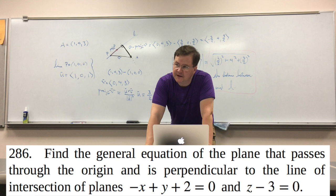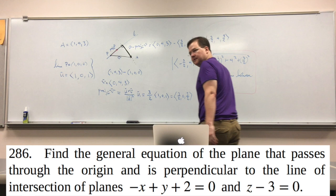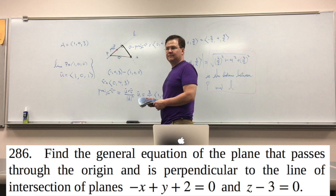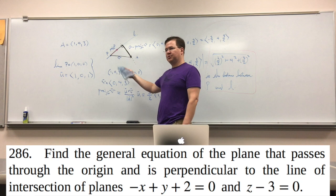Y equals x minus 2. The line of intersection is actually y equals x minus 2, right? But y equals x minus 2 is technically the equation for a plane. So you have to parameterize the line.